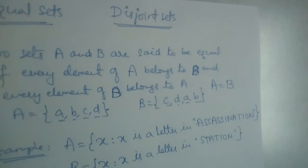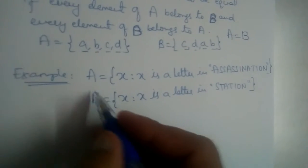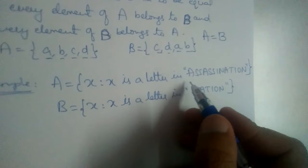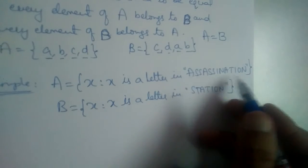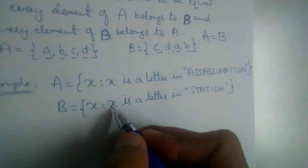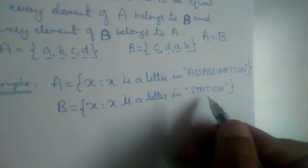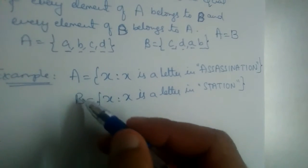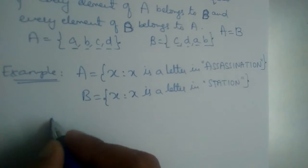Now we have an example here. A equals X such that X is a letter in assassination. And B equals X such that X is a letter in station. Let us check whether set A and B are equal or not.